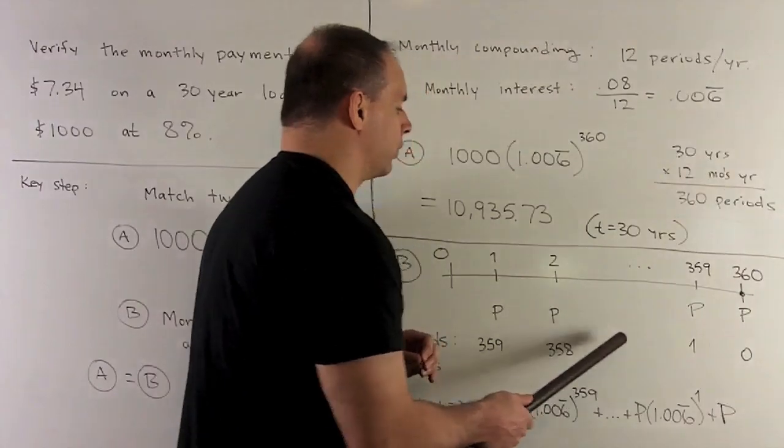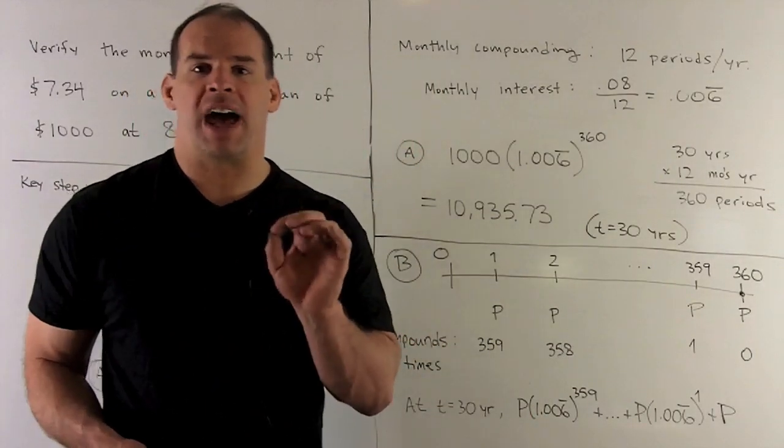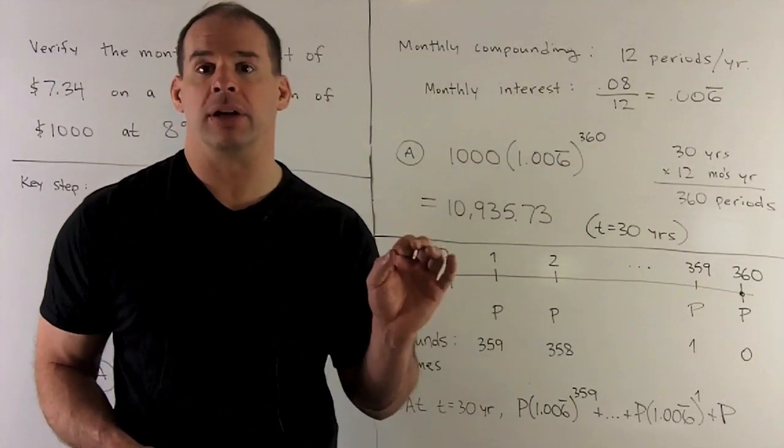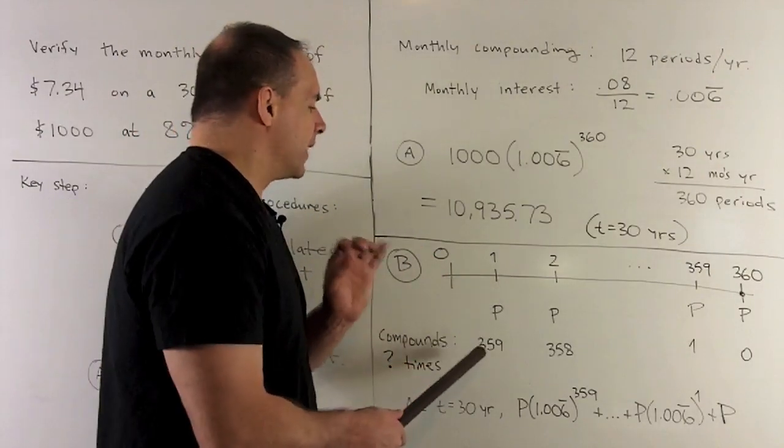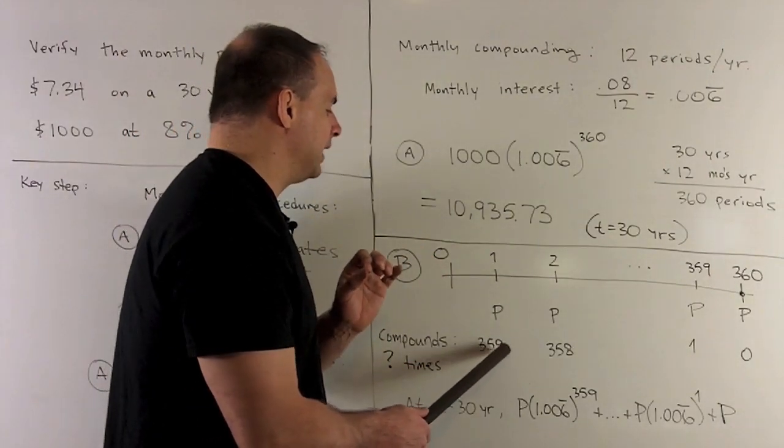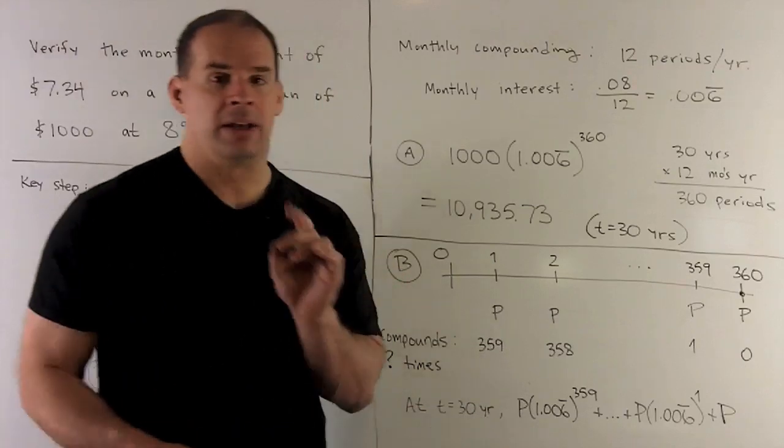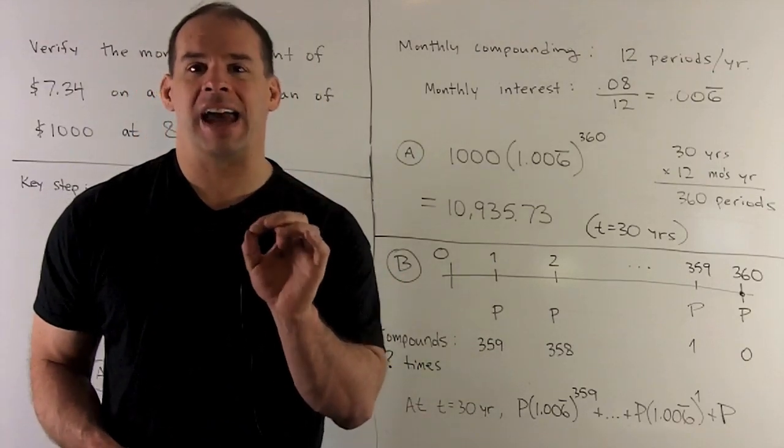Then you'll note we're just going to work backwards. So it'll be zero, one, two, three. Let's go tell you the number of times each payment's being compounded. So for our very first payment, that's going to compound 359 times. Now, you need to be careful there. It's 359, not 360.